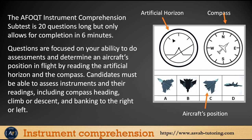The AFOQT instrument comprehension subset has 20 questions and you have only six minutes to answer. The questions are focused on your ability to assess and determine an aircraft's position in flight by reading the artificial horizon and the compass. You can see here — this is the artificial horizon and this is the compass.